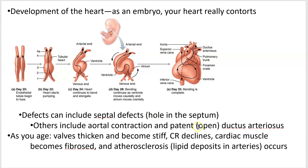There's also what's called a patent — or open — ductus arteriosus. The ductus arteriosus in an embryo connects the aorta to the pulmonary trunk. You also have a foramen ovale, which connects the right atrium to the left atrium. As an embryo, when you're getting all your oxygen from mom through your umbilical cord, you want to mix the blood so your lungs and body can all get oxygen. But as soon as you're born, those things clench up — the foramen ovale becomes the fossa ovalis, and the ductus arteriosus becomes the ligamentum arteriosum.